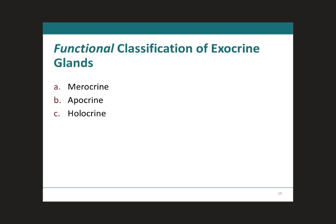We can also classify exocrine glands according to how they secrete their products. There are three types: merocrine, apocrine, and holocrine. The way they secrete goes from a more simple type of secretion, which is merocrine, to a more complex type, which is holocrine. A helpful mnemonic is to think about M-A-H going from simple to complex.